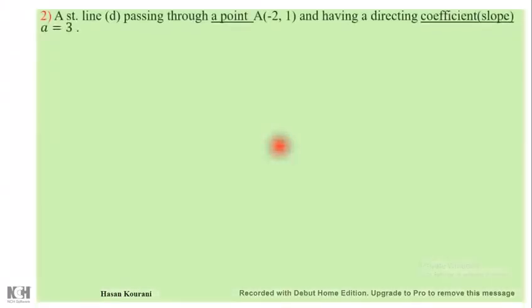Let's see the second example. Here we have a straight line passing through a point (-2, 1) and having a directing coefficient, which is in fact the slope, a = 3.